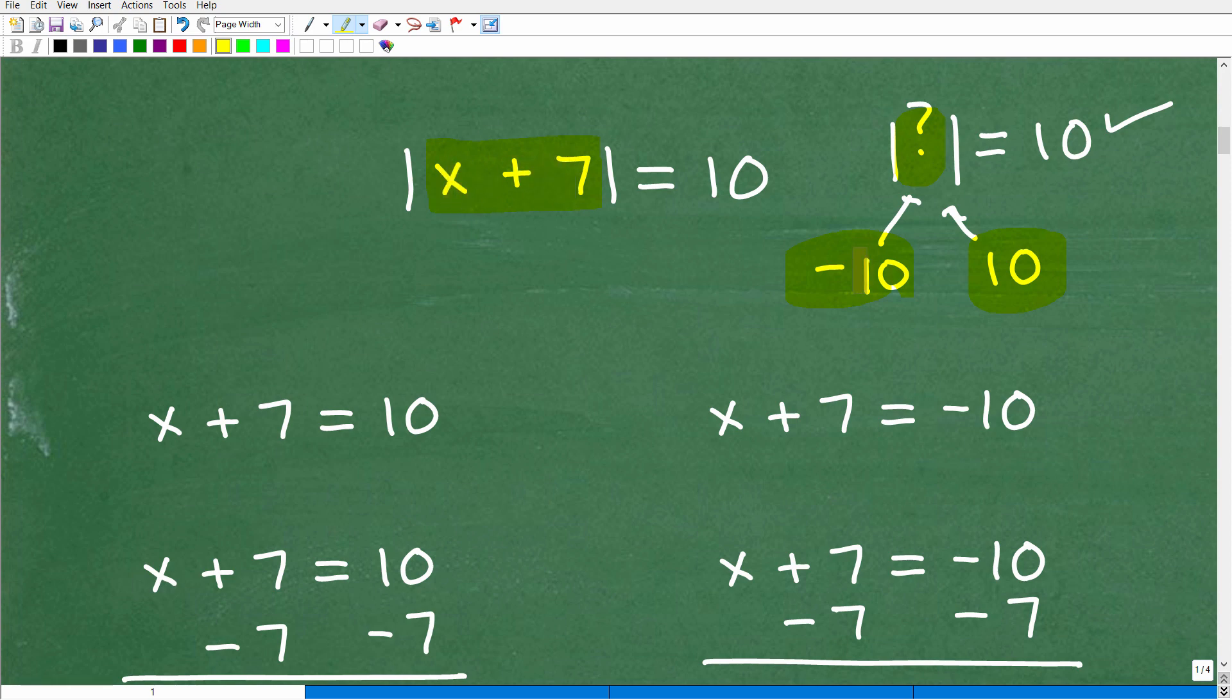So to solve for x here, we're going to set x plus 7 equal to 10, okay? We're saying, okay, x plus 7, you either are equal to 10 or x plus 7, you're either equal to negative 10, and this is the setup, okay?